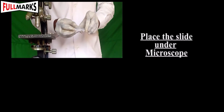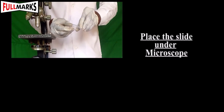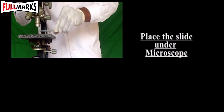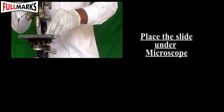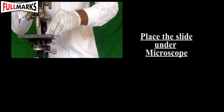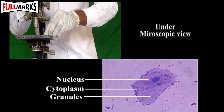After two to three minutes, place the cover slip gently on the cheek cell preparation with the help of a needle, avoiding air bubbles. Place the slide under the microscope and observe it.